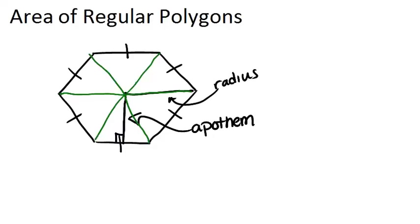Then, find the area of each triangle and multiply by how many triangles there are to find the total area of the whole polygon.